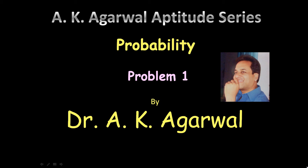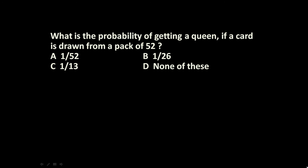Hello friends and welcome to AK Agroal Aptitude Series. In this session we are going to learn a technique for solving a problem on simple probability. The first problem given is: what is the probability of getting a queen if a card is drawn from a pack of 52?